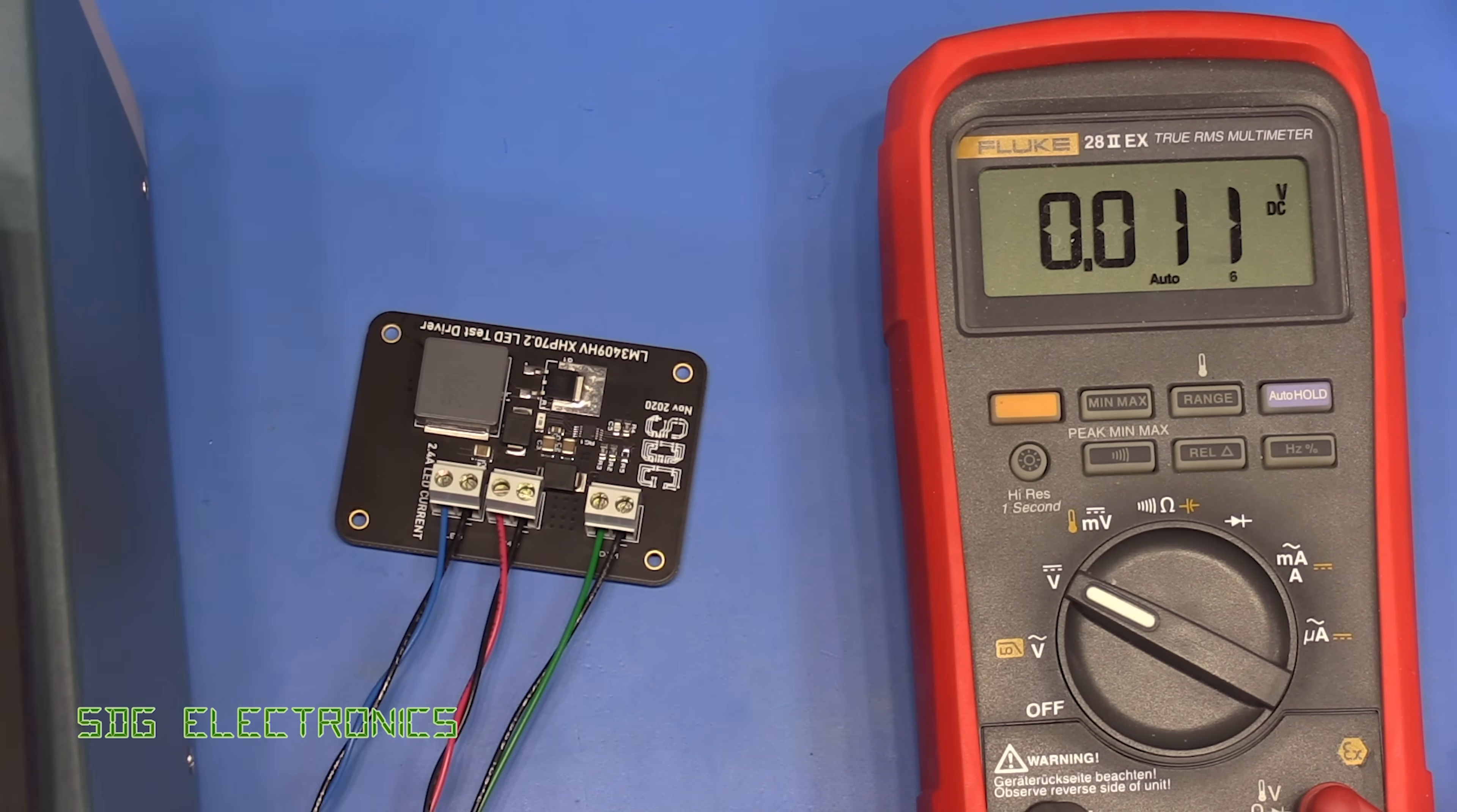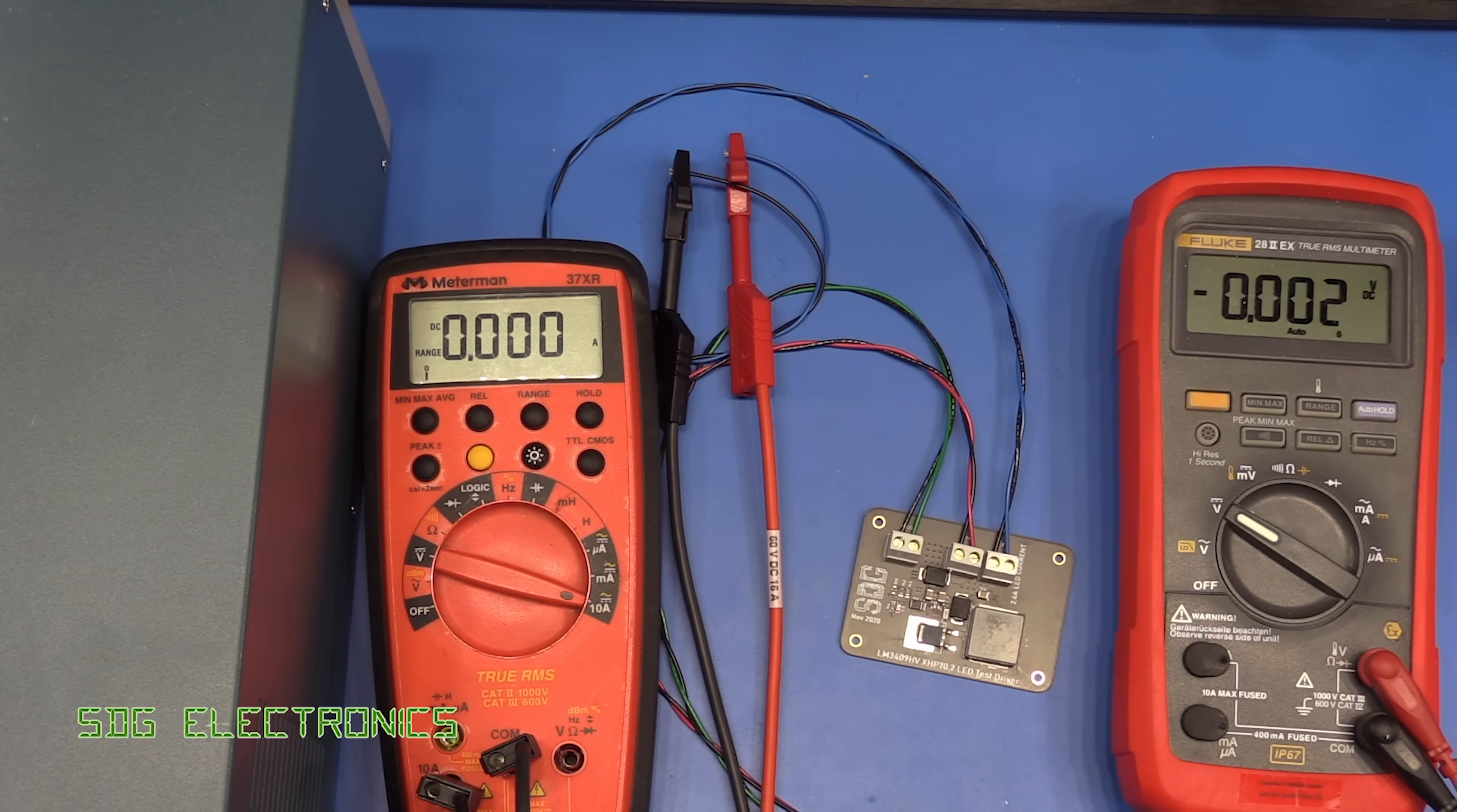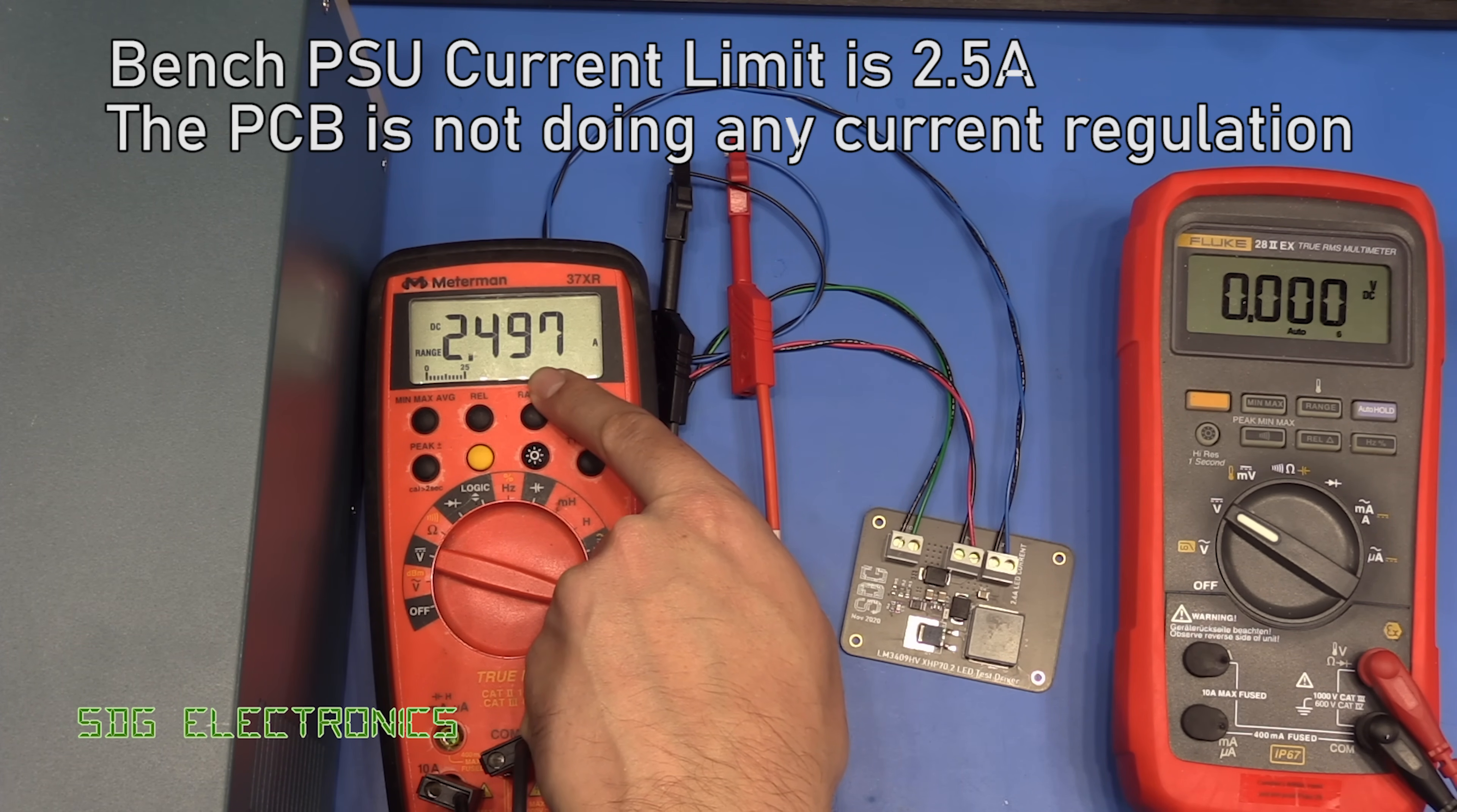Next up I'm going to connect up the DC load and I'm just going to check that the output is actually regulating at around 2.4 amps. Okay so we've now got the DC load hooked up in constant voltage mode set to 12 volts. It will replicate an LED with a forward voltage of 12 volts and the current limiting should be performed by the driver board. So I'll turn on the power supply and that doesn't look right. The power supply is current limiting. The current limit is set to 2.5 amps and we're seeing the full amount being drawn.